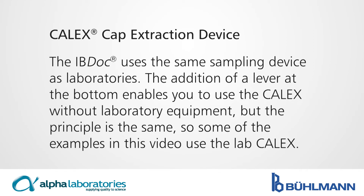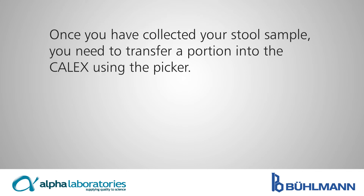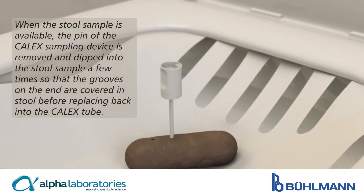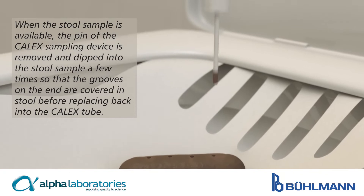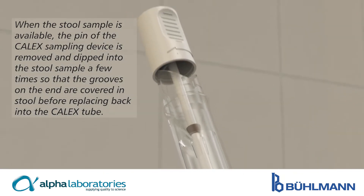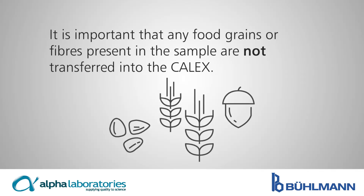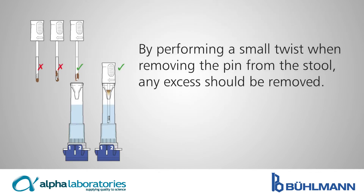Once you have collected your stool sample, you need to transfer a portion into the calyx using the picker. When the stool sample is available, the pin of the calyx sampling device is removed and dipped into the stool sample a few times so that the grooves on the end are covered in stool, before replacing back into the calyx tube. It is important that any food grains or fibers present in the sample are not transferred into the calyx. By performing a small twist when removing the pin from the stool, any excess should be removed.